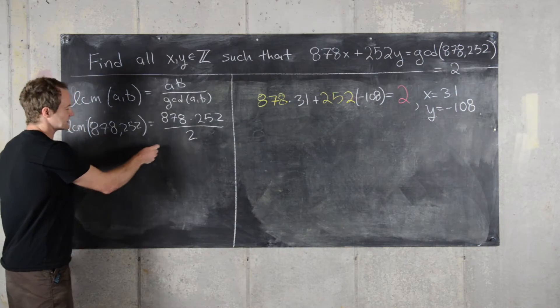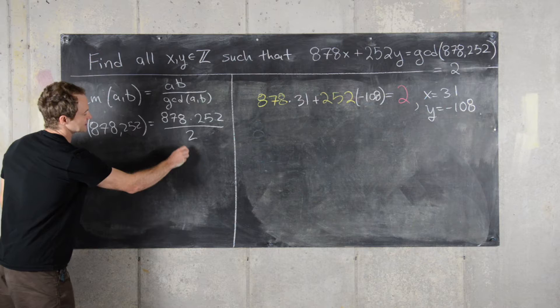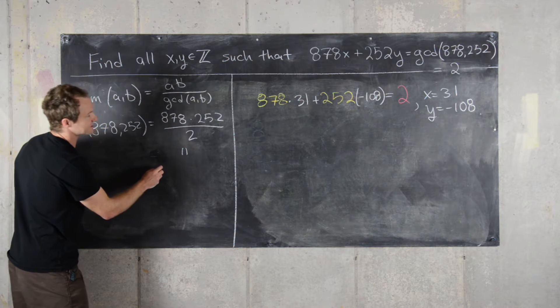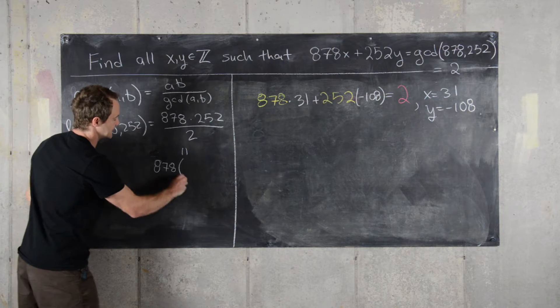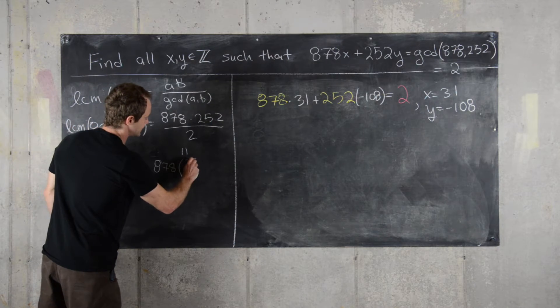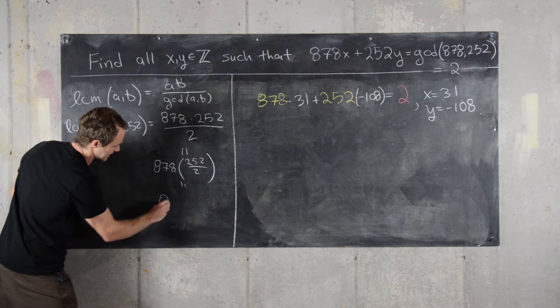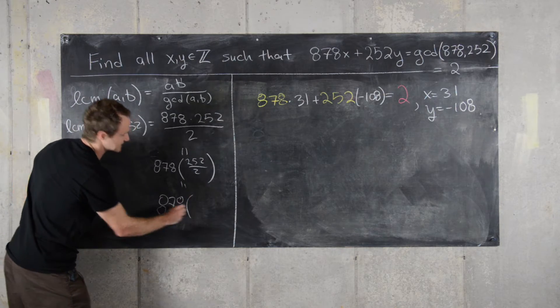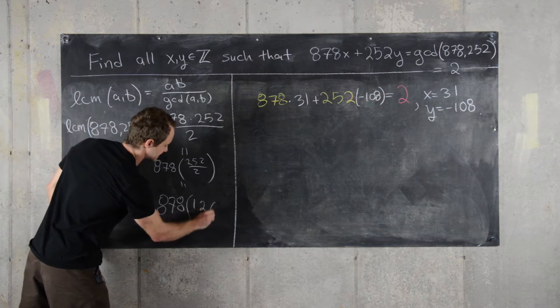I'll use this fact that we can express this two different ways. So we can express this one way as 878 times 252 over 2. So that's 878 times 126.